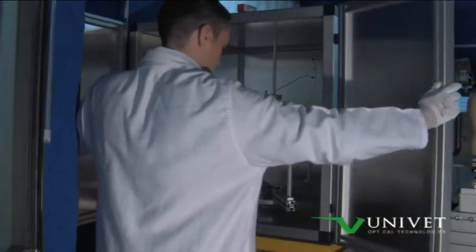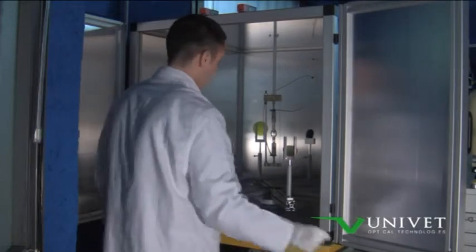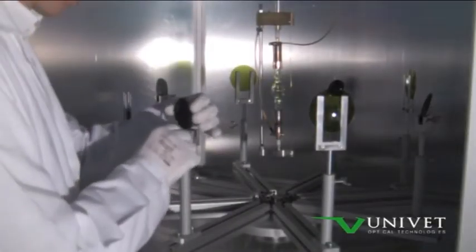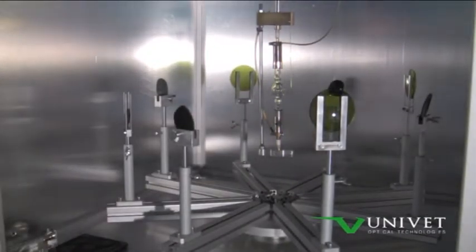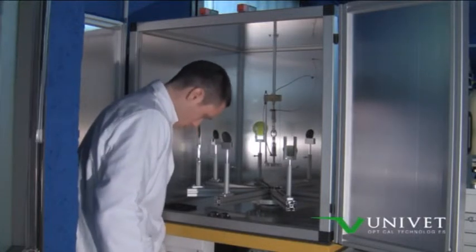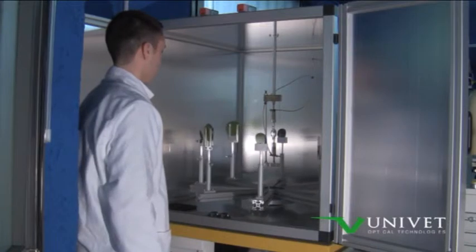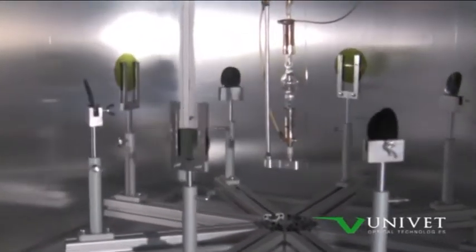The artificial aging test is used to study the behavior of the eyewear, following a long-term use by simulating the accelerated aging process suffered from a PPE during its life cycle. The eyewear is inserted in a chamber and exposed for 50 hours to the light of an ultraviolet lamp with a power of 500 watts.